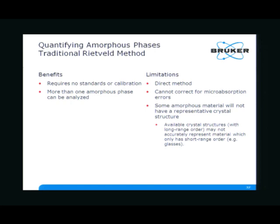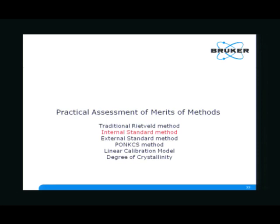The same advantages as the Rietveld method has for crystalline samples apply here: you do not require standards or calibration curves. More than one amorphous phase can be analyzed. However, it's a direct method and cannot correct for microabsorption errors. Some amorphous material will not have a representative crystal structure, so you will be able to use this method only in rare cases. Available crystal structures with long range order may not accurately represent material which only has short range order — this is particularly true for glasses.